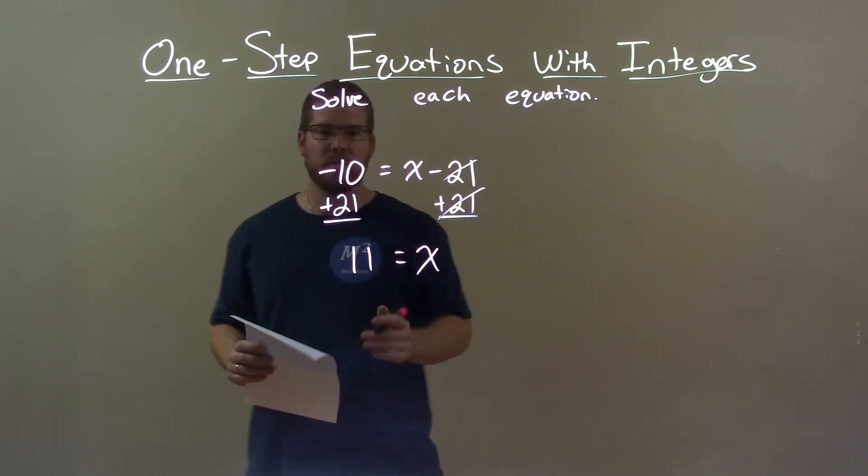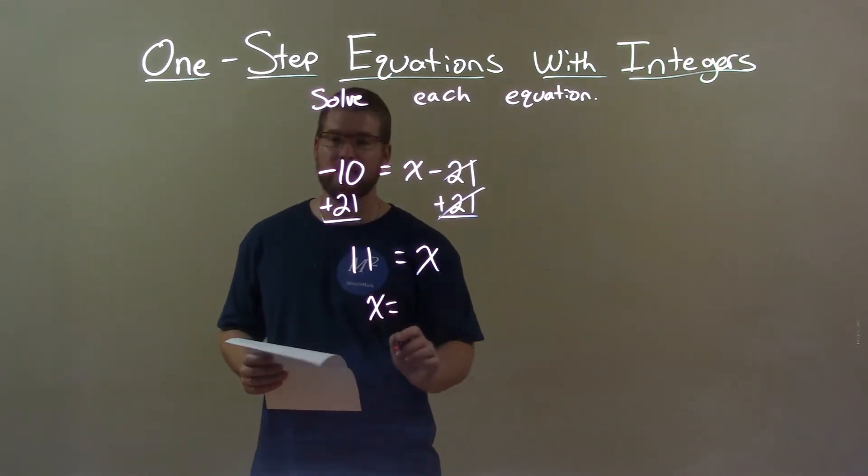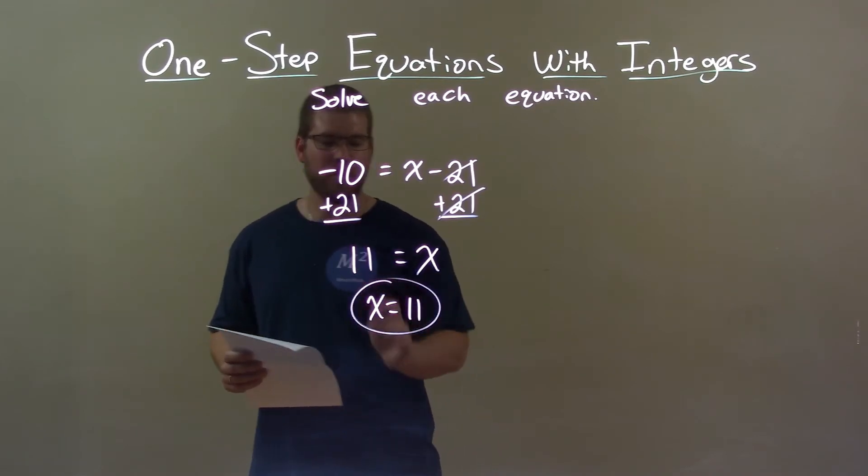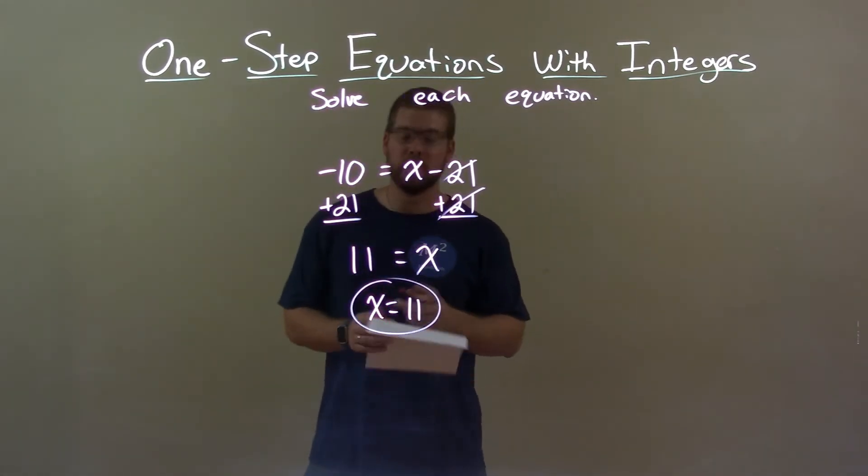Alright, 11 equals x. We're going to have x coming first. x equals 11. And there we go. Our final answer is x equals 11.